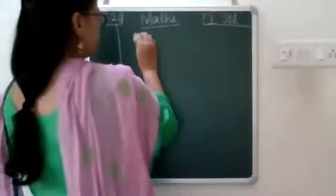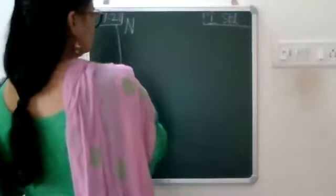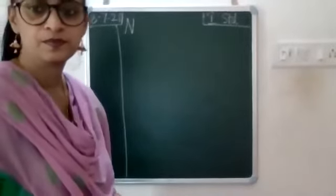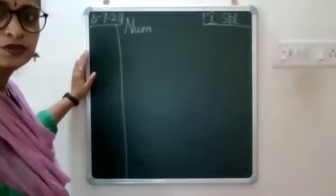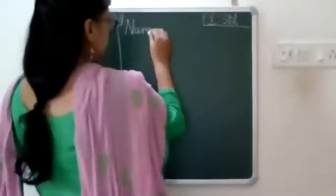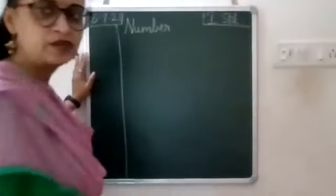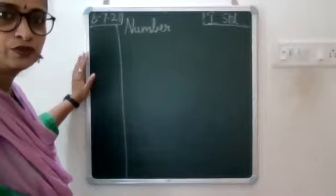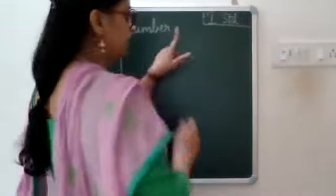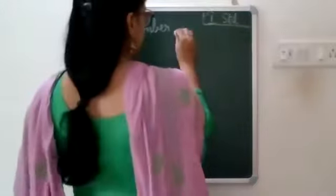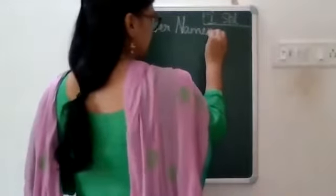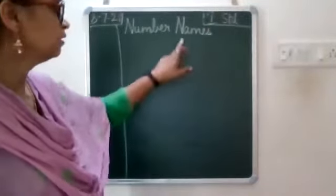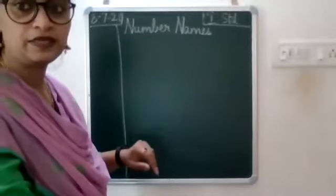Below the red line, in the first line, everyone write along with me. Write capital N-U-M-B-E-R, then leave one finger space, write capital N-A-M-E-S. Number Names.